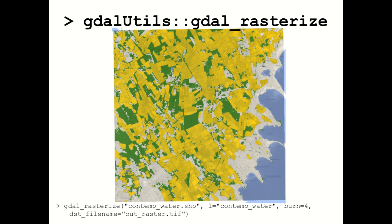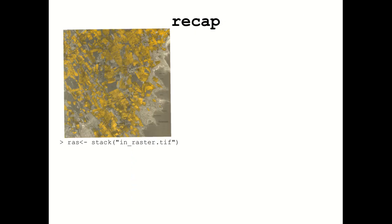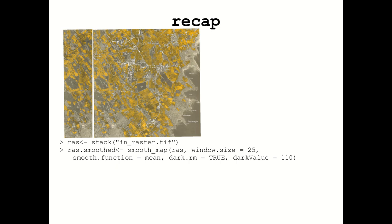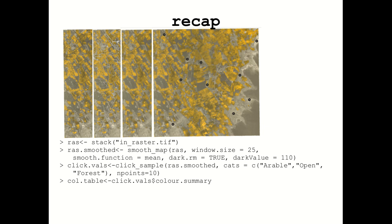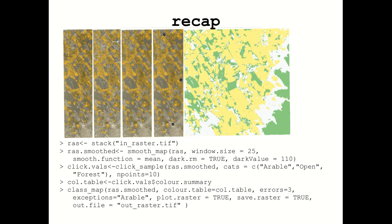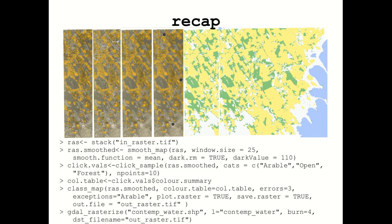To recap: we take our input map, smooth it by removing text and land boundaries as much as possible and smoothing over those areas, then tell the environment which RGB values exist within each map category, then classify the map. If needed, we can add water separately.